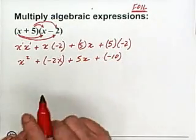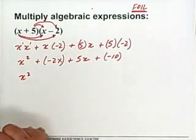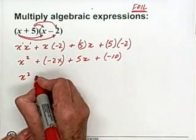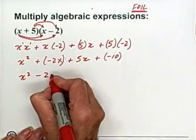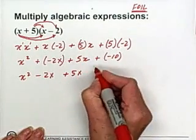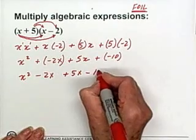Now getting rid of all the brackets. We have x². A plus in front of a minus. So this allows us to just take away the bracket and change this to a minus. This is -2x. Plus 5x. And again the plus with the minus. We just change this to a -10.